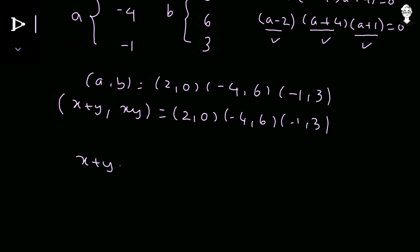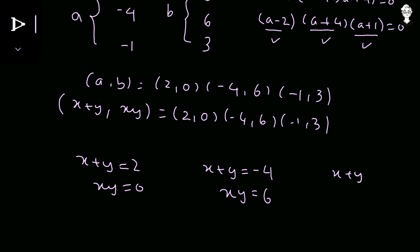From each pair we form two equations in x and y. Case 1: x + y = 2, xy = 0. Case 2: x + y = −4, xy = 6. Case 3: x + y = −1, xy = 3. We now solve each case to find the real values of x and y.